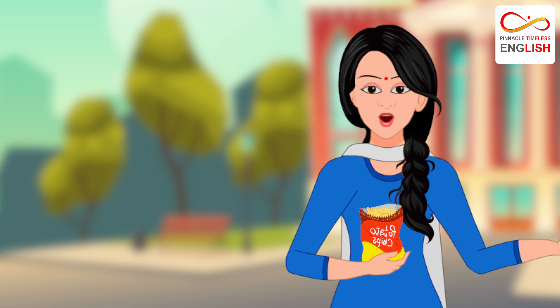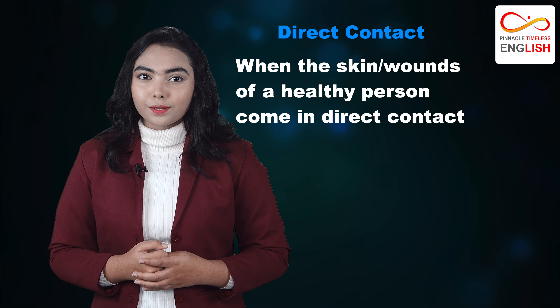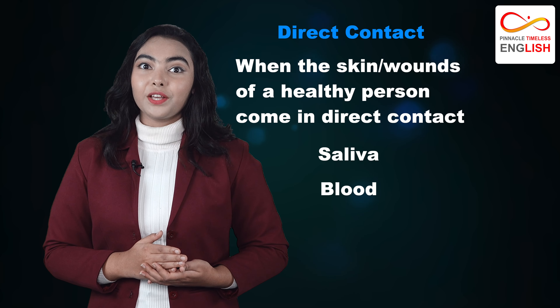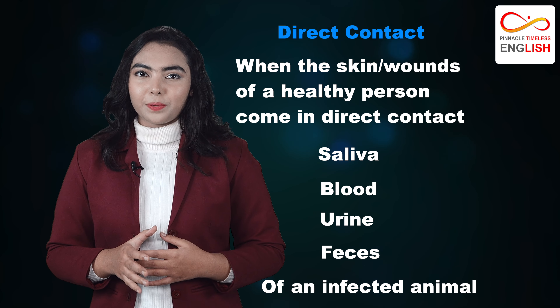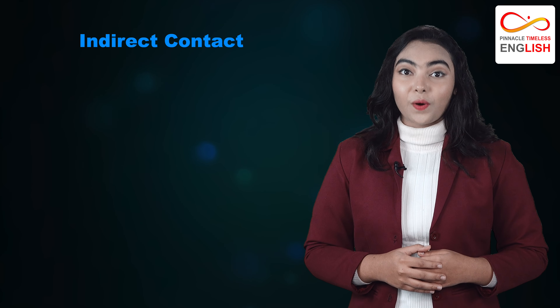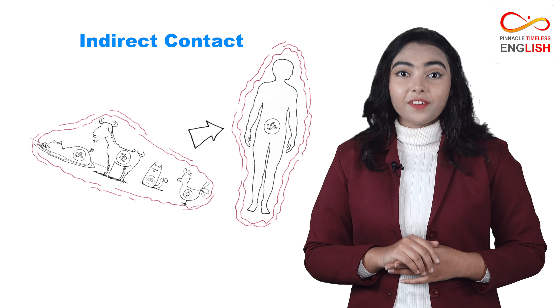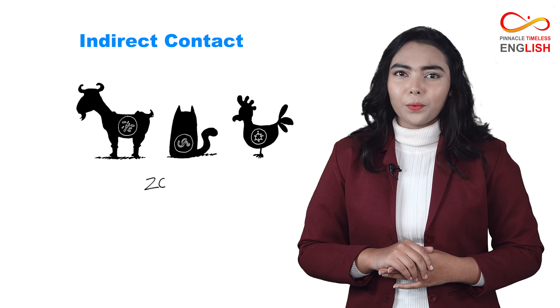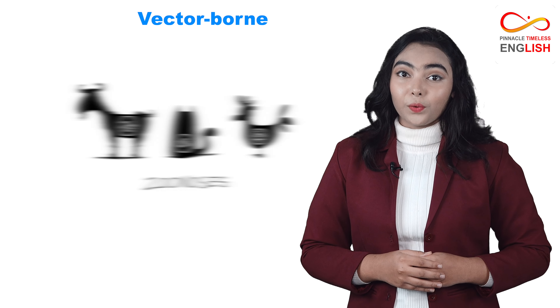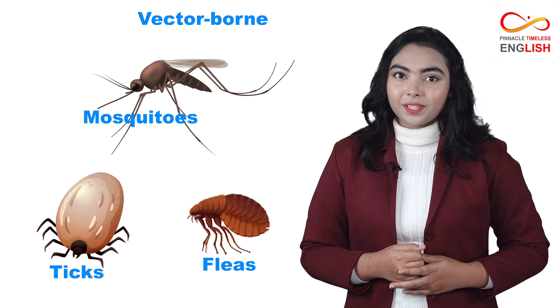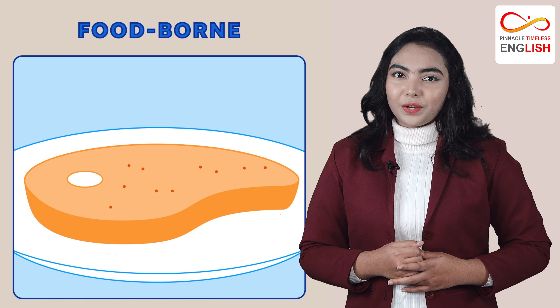Other modes of transmission include: direct contact, when skin wounds or scratches of a healthy person come into contact with saliva, blood, urine, or feces of an infected animal; indirect contact, when a healthy individual comes into contact with areas where infected animals live or roam; vector-borne, when the disease spreads via agents like ticks, mosquitoes, or fleas; and foodborne, when consuming food contaminated with excreta from an infected animal.